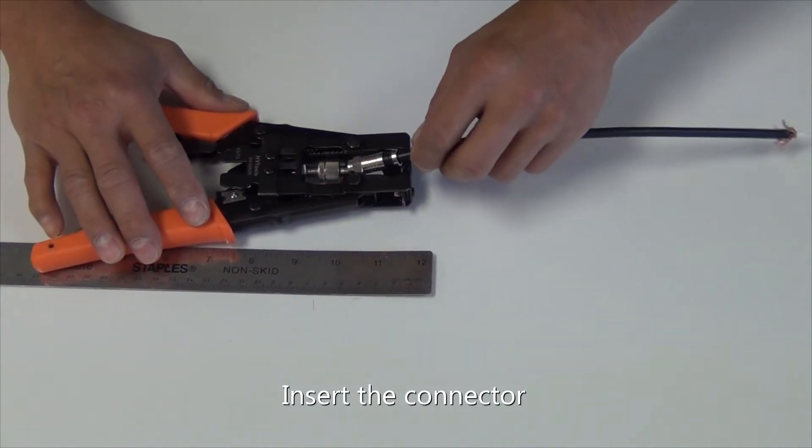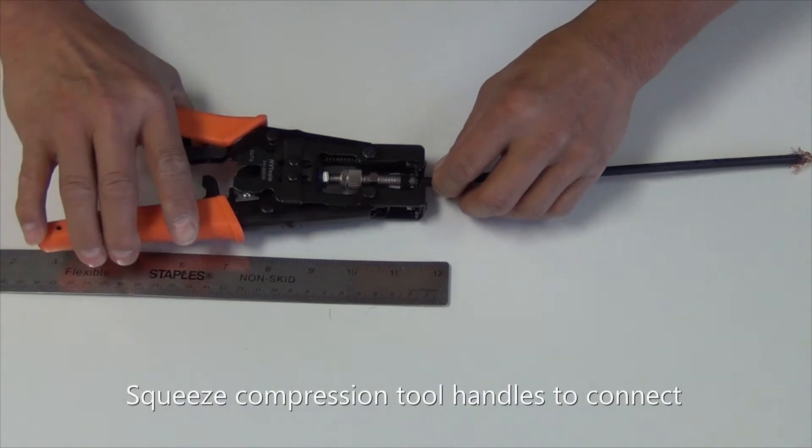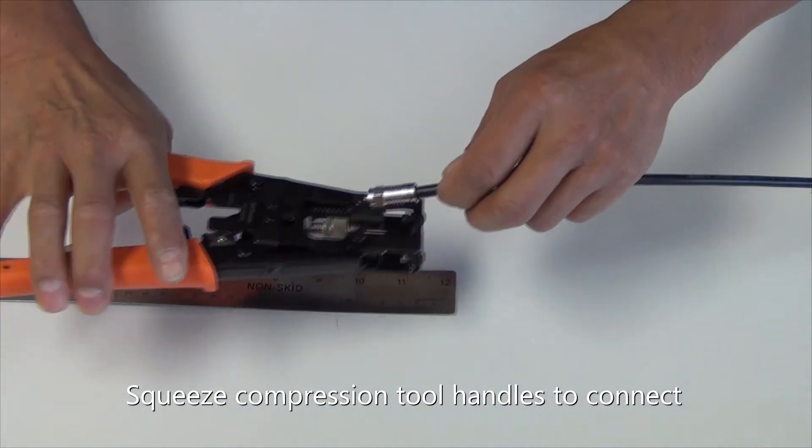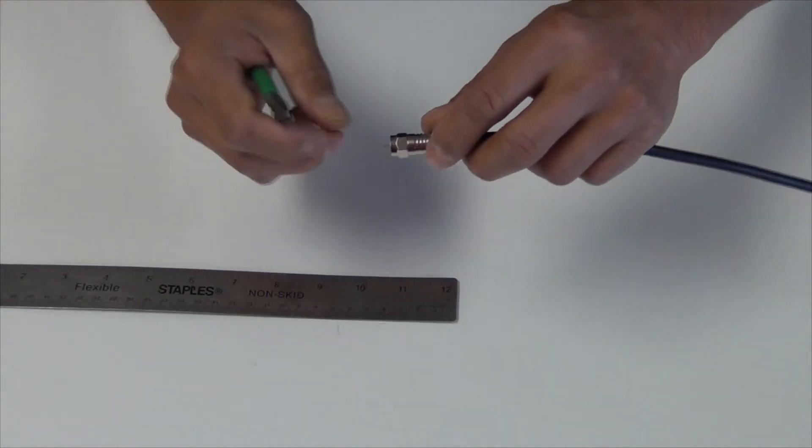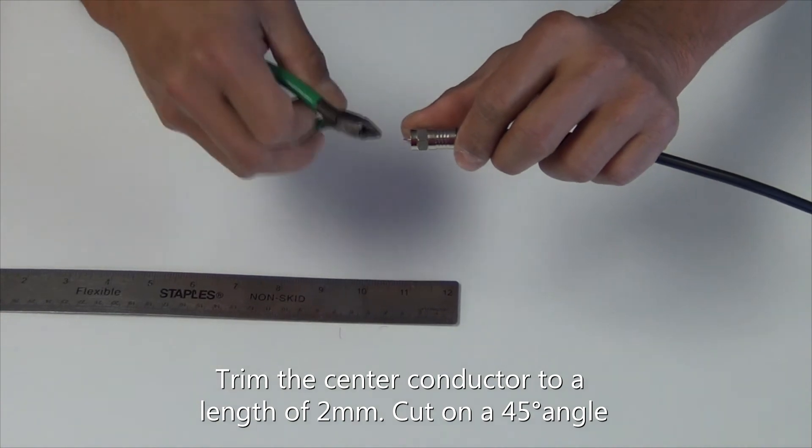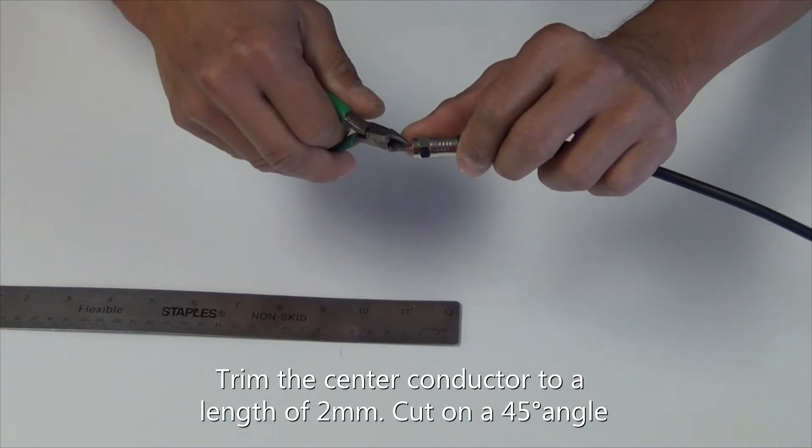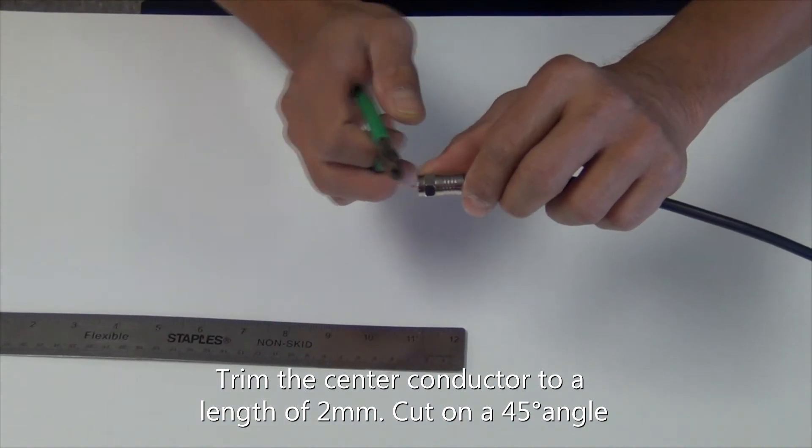Squeeze the compression tool handles to connect. Trim the center conductor to a length of 2 millimeters, cut on a 45-degree angle.